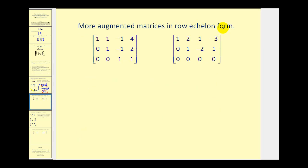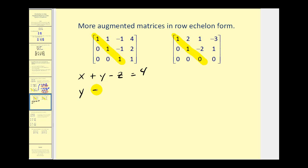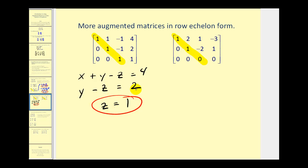Here are a couple of other examples of systems written in row echelon form. In both cases, the main diagonal contains 0s or 1s, and everything below the main diagonal is 0. For the first example, rewriting as equations gives: x plus y minus z equals 4, y minus z equals 2, and z equals 1. Since we know z equals 1, we substitute into the second equation: y minus 1 equals 2, which implies y equals 3.